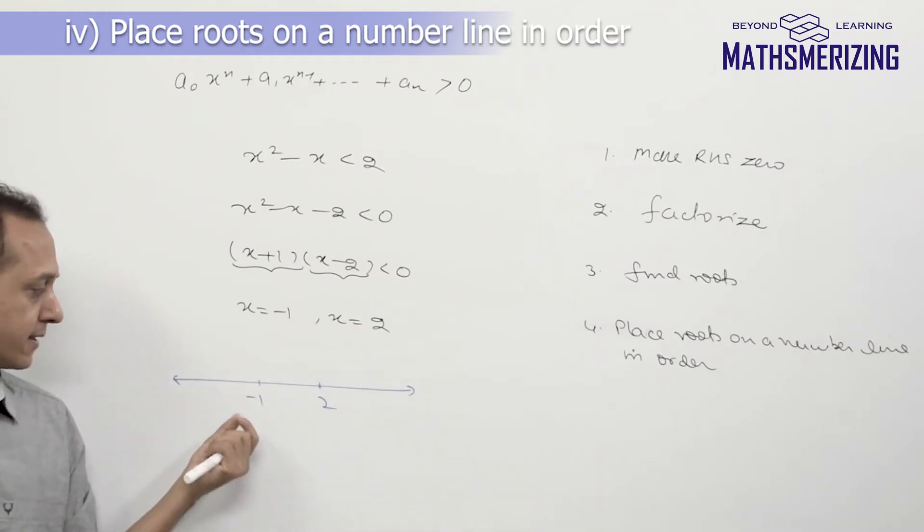What they have done is they've partitioned the number line into three intervals. Interval 1 when x is less than -1, interval 2 when it lies between -1 and 2, and the third interval when it is greater than 2.